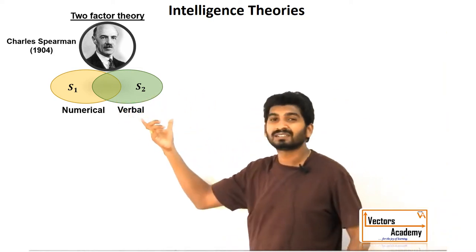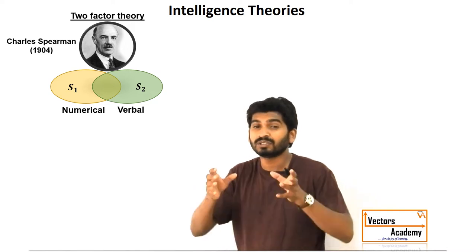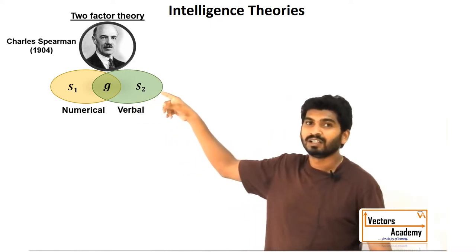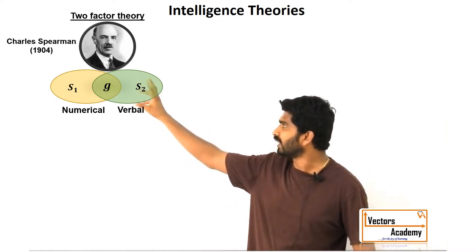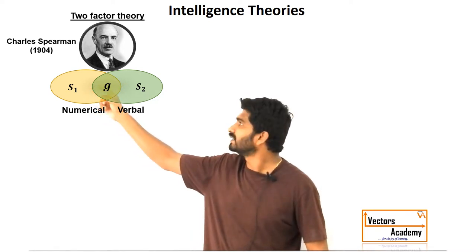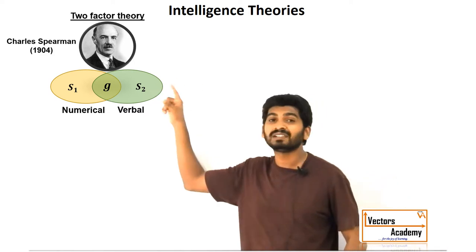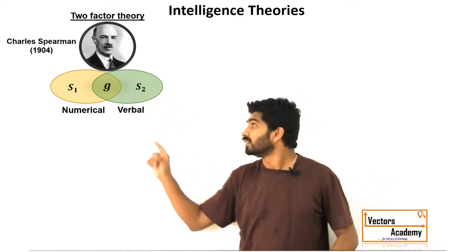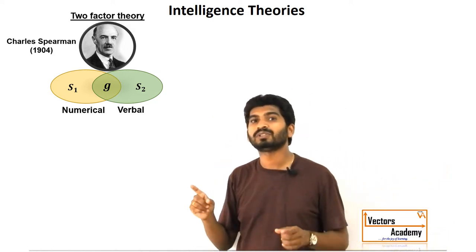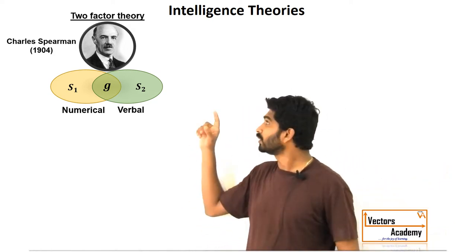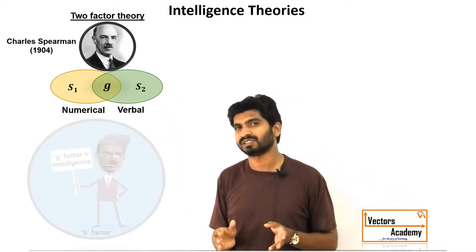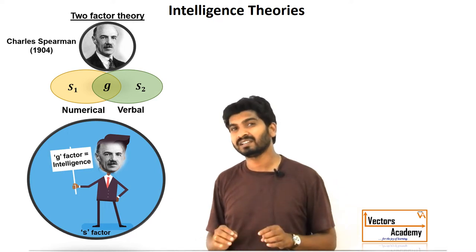There is some set of skills which are common to both tasks. These are the two sets of factors required: S, the specific factor, and G, the general factor, which is present in both tasks. This G factor is the one which is responsible for the intelligence of a person. Spearman designed a test to measure the general factor while he completely neglected the specific factors.